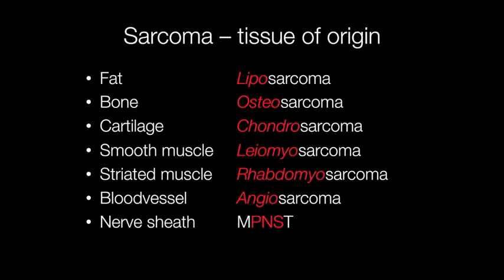Sarcomas arising from fat are liposarcomas, from bone osteosarcomas, cartilage chondrosarcomas, smooth muscle leiomyosarcomas, striated muscle rhabdomyosarcomas, blood vessels angiosarcomas, and malignant peripheral nerve sheath tumours for those arising from the nerve sheath.